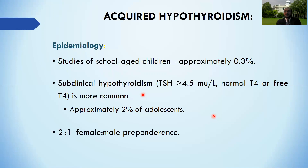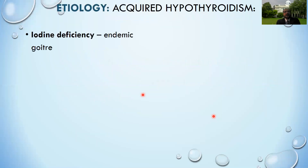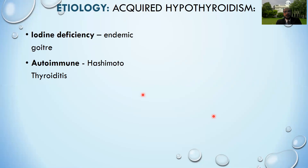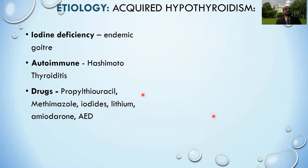Females are more likely to have hypothyroidism. Causes include: iodine deficiency - very common in our setup, leading to endemic goiter and hypothyroidism; and autoimmune thyroiditis (Hashimoto's thyroiditis) - very common in Down syndrome and Turner syndrome. Even without these syndromes, 20-30% of cases have a family history of autoimmune thyroiditis. It has an insidious onset, occurs after age six years, peaks around adolescence, and females are more commonly affected.